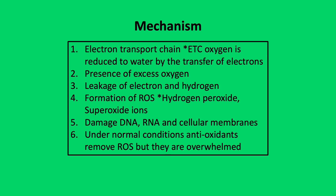The Mechanism of Oxygen Toxicity: At the electron transport chain (ETC), oxygen is reduced to water by the transfer of electrons. In the presence of excess oxygen, there is leakage of electrons and hydrogen, leading to the formation of reactive oxygen species or oxygen free radicals. Important ones include hydrogen peroxide and superoxide ions. These have one or more unpaired electrons and are therefore free to interact with surrounding tissue, leading to damage of DNA, RNA, and cellular membranes.